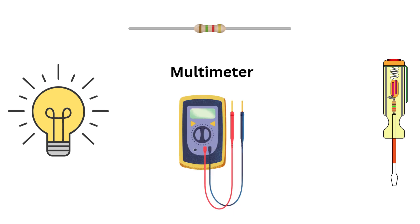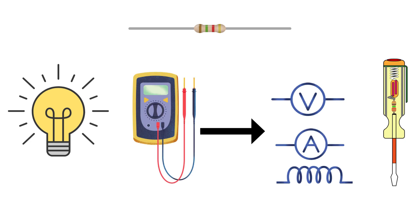First up is the multimeter, your Swiss army knife of electrical tools. It measures voltage, current, and resistance, helping you diagnose issues and test components. It's a must-have for any engineer's toolkit.